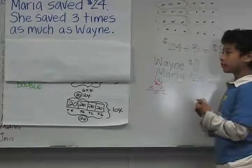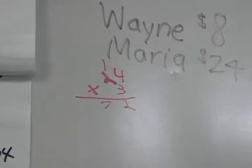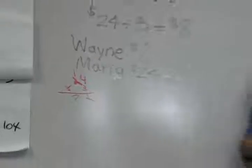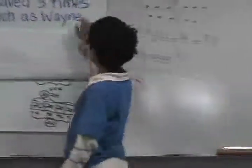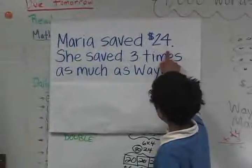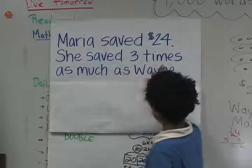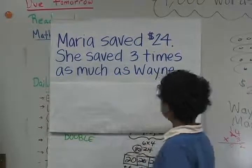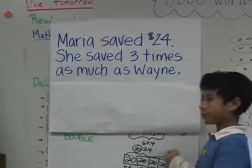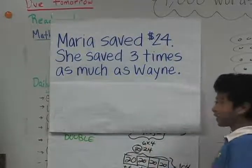So where is that in the picture? Did everyone see what he wrote? Okay. So where is that in the picture up there? Do you see that? Yeah. 24 dollars and then over here it says she saved three times as much as Wayne. As much as Wayne. Okay.